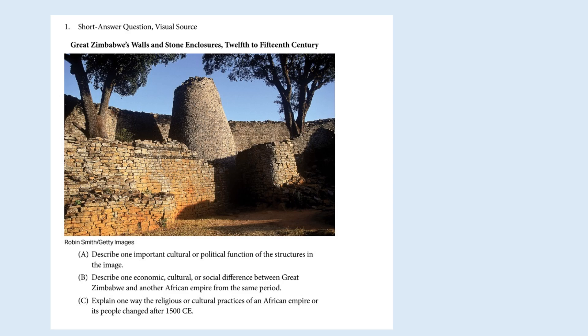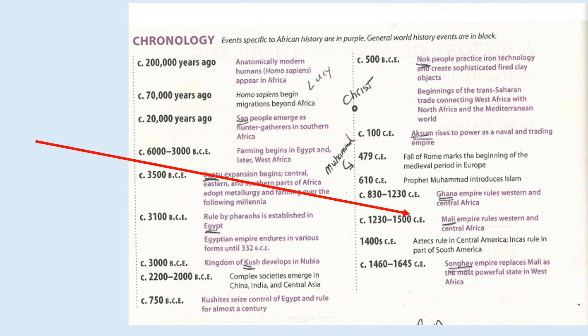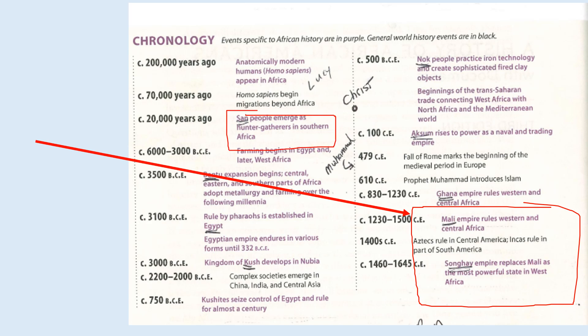This brings us back to the question that is going to come up repeatedly: describe one cultural or political function of the structures. As mentioned before, there's some dispute about whether it's military. Was it political? Or do the structures themselves say something about this civilization's ability to build? Either way, you have to describe the cultural and political function. Keep in mind the date — 1500 — which locks us into this particular area on the timeline. You definitely wouldn't want to write about the San people, as that is not going to help you score well on that particular question.